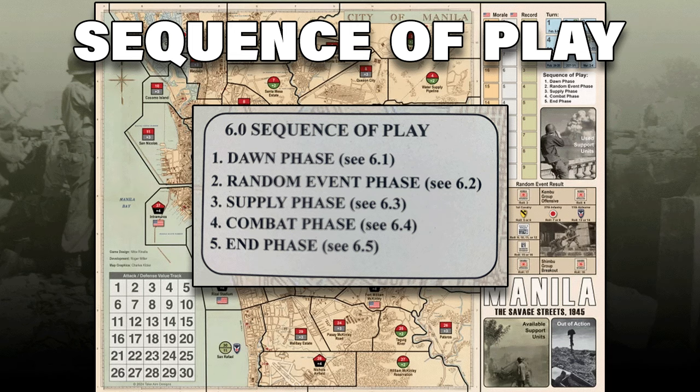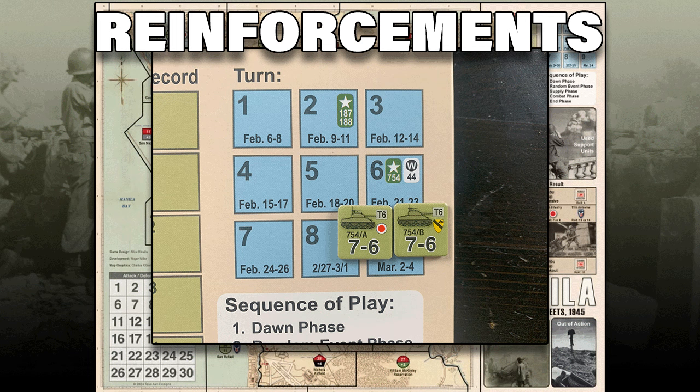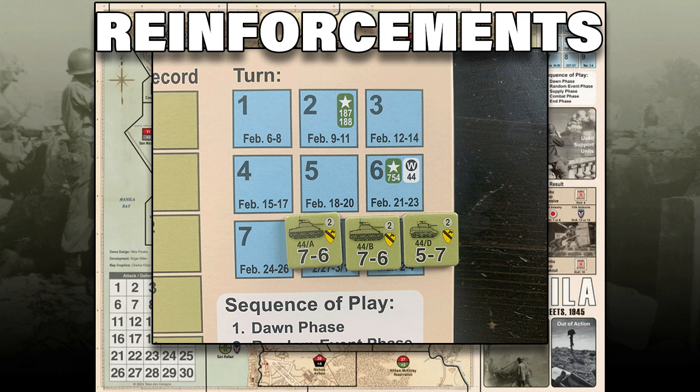The sequence of play starts with the dawn phase and reinforcements. The player receives reinforcements twice during the game. On turn 2, the six units of the 11th Airborne Division are placed in any combination of area 30 and/or, if American controlled, areas 27 and/or 28 — normal stacking rules apply in areas 27 or 28. On turn 6, the 754th A armor unit is placed in area 1 and 754th B in area 2. Also on turn 6 there is one permanent withdrawal — remove the three units of the 44th Tank Battalion from play whether in the map area, on the turn track, or in the out-of-action box. For each of these in the out-of-action box at the moment of removal, reduce American morale by minus 1.